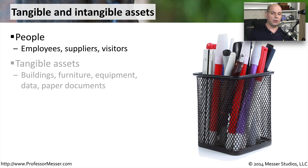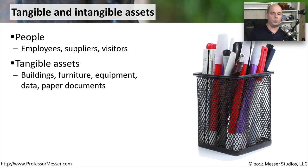There are also tangible assets. These are assets that we can physically touch. So all of the books that are on a shelf, all of your computer equipment, all of your furniture, anything that might be a paper document — those are the things that we would consider tangible assets.